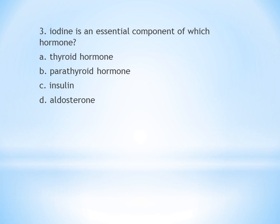Third question: Iodine is an essential component of which hormone? A. Thyroid hormone, B. Parathyroid hormone, C. Insulin, D. Aldosterone. Iodine is an essential component of thyroid hormone. Iodine deficiency or excess leads to conditions like hypothyroidism and hyperthyroidism.